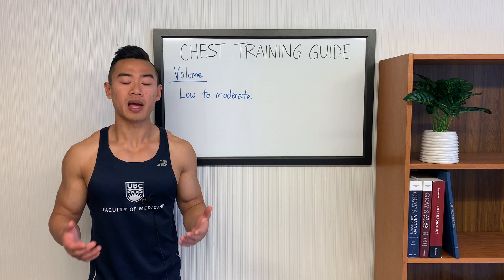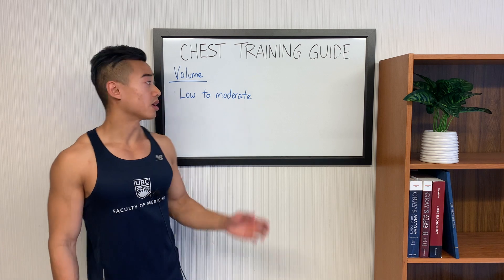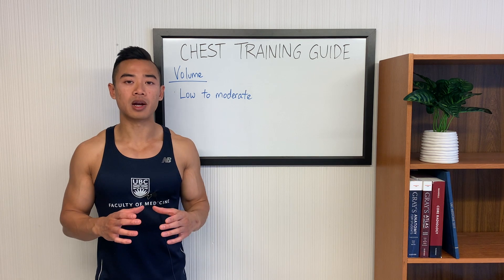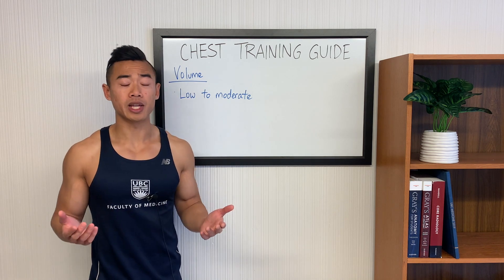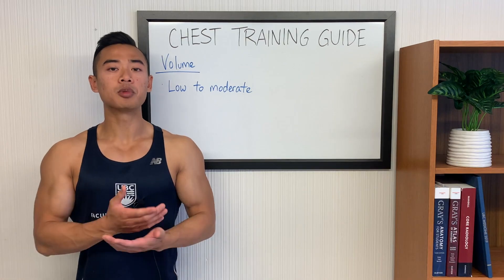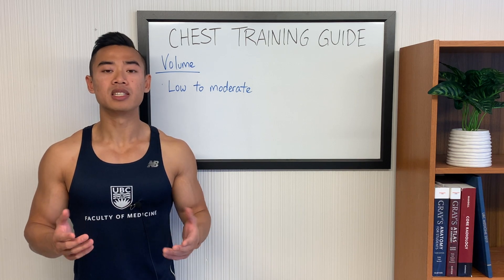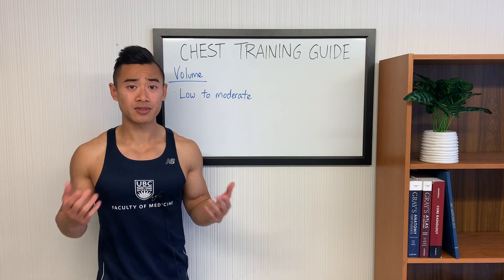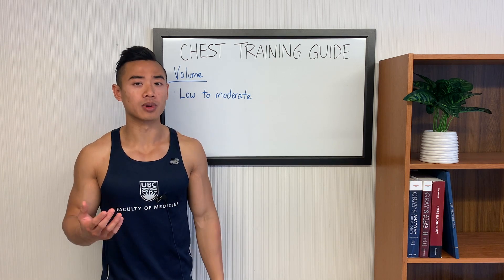Now that we've talked about training anatomy and biomechanics, let's move on to other training variables for our chest training programs. Starting off with volume, it's important to note that the chest is relatively fast twitch dominant. Fast twitch dominant fibers typically respond better to heavier training with lower volumes. Volume refers to the number of sets you do in the week, and for chest, I'd recommend aiming for the low to moderate end. The optimal volume will vary depending on the person and muscle group, so you really need to experiment to find what works best for each muscle group.